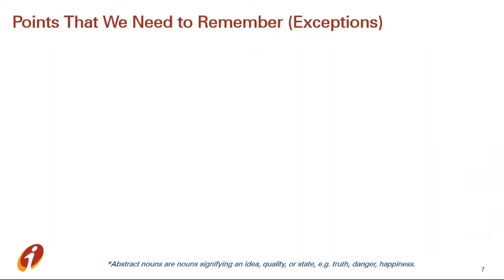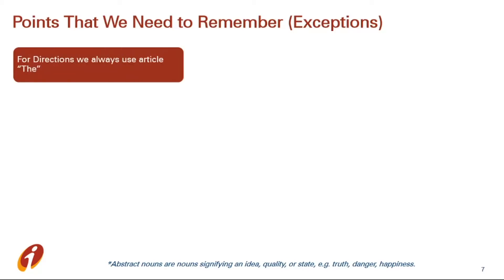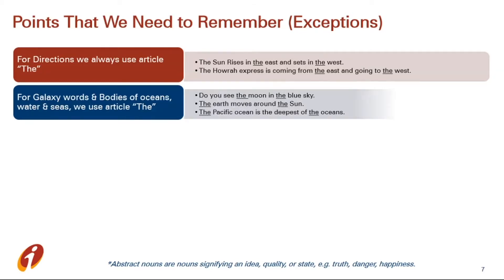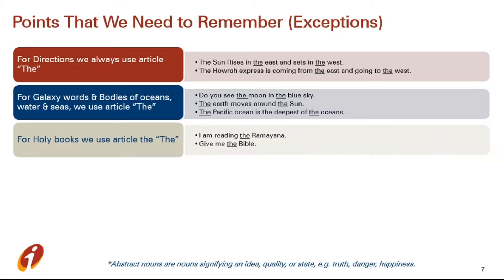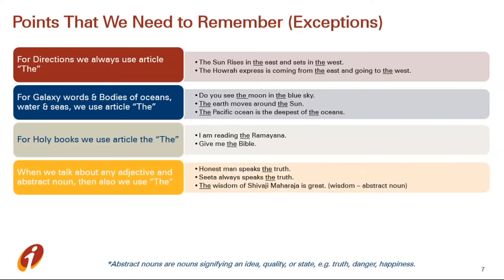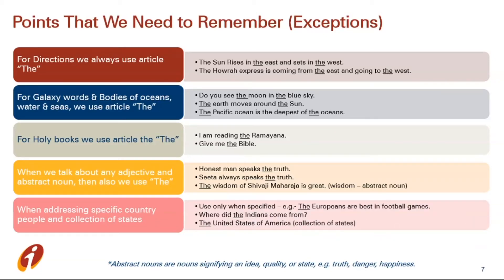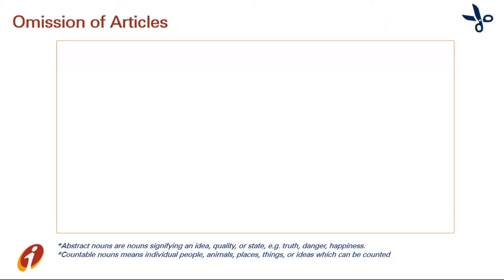Now let's see some exceptions where we always use the article 'the'. When we talk about directions, we always use 'the' — east, west, north, or south. When we talk about celestial bodies, oceans, waters, and seas, we use 'the' — the sun, the moon, the sky, the Pacific Ocean, the Atlantic Ocean, and so on. When we talk about holy books, we always use 'the' — the Ramayana, the Bhagavad Gita, the Bible, the Quran, and so on. When we talk about abstract adjectives like truth or danger, we use 'the'. When we talk about a specific country like India, USA, or Pakistan, we use 'the', and when we talk about a collection of states, we also use 'the'.